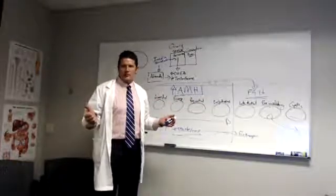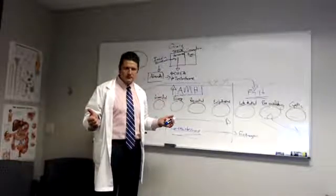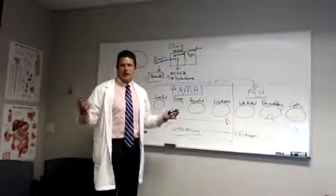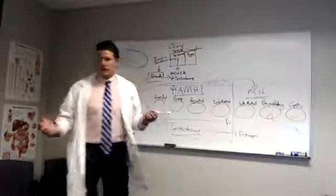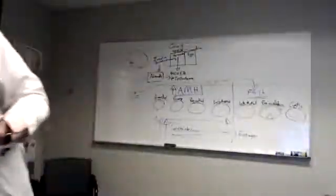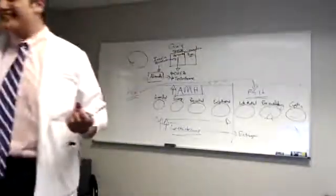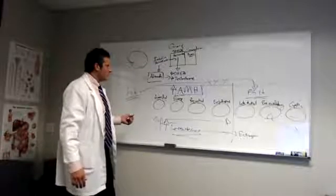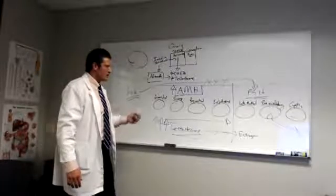So the number one cause of infertility is PCOS. Number two is Hashimoto's. Both cause elevated anti-mullerian hormone. It looks like we have another question. Hey Trish, great to see you. I love it. Hey buddy. So in essence, that's the talk. I'm sorry again that we lost it.